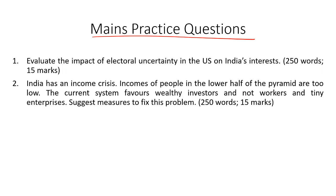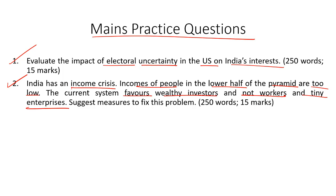Finally, let's take up a couple of mains practice questions. The first question: evaluate the impact of electoral uncertainty in the United States on India's interests. The second question: India has an income crisis — incomes of people in the lower half of the pyramid are too low, and the current system favors wealthy investors and not workers and tiny enterprises. Suggest measures to fix the problem. Kindly write an answer to these questions and post your answers in the comment section below. This concludes our discussion for the day. Thanks for watching.